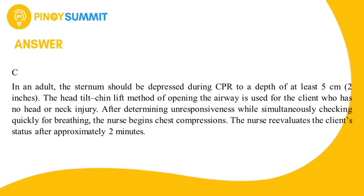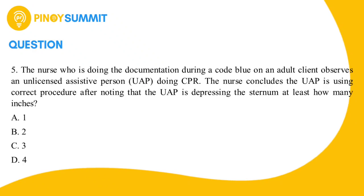Number five: The nurse documenting during a code blue on an adult client observes an unlicensed assistive person (UAP) doing CPR. The nurse concludes the UAP is using correct procedure after noting that the UAP is depressing the sternum at least how many inches? A) 1, B) 2, C) 3, D) 4.